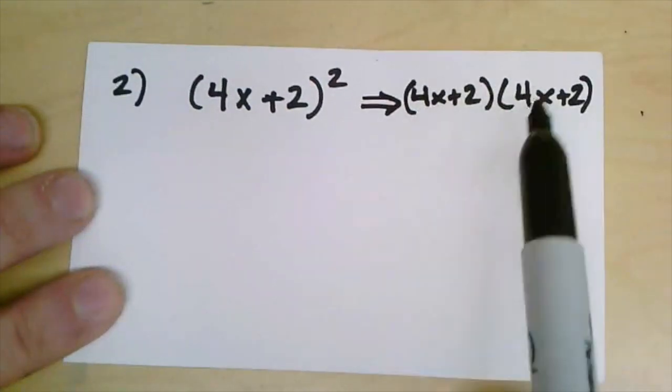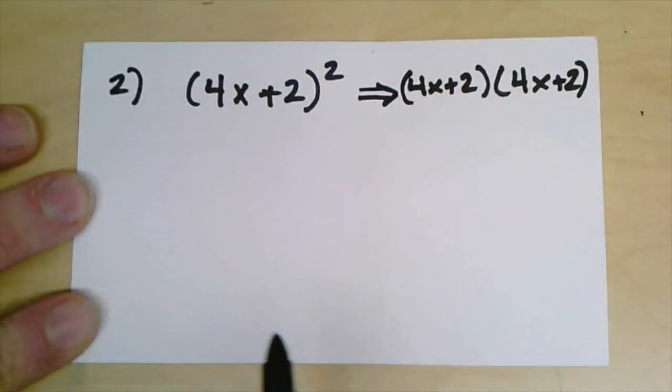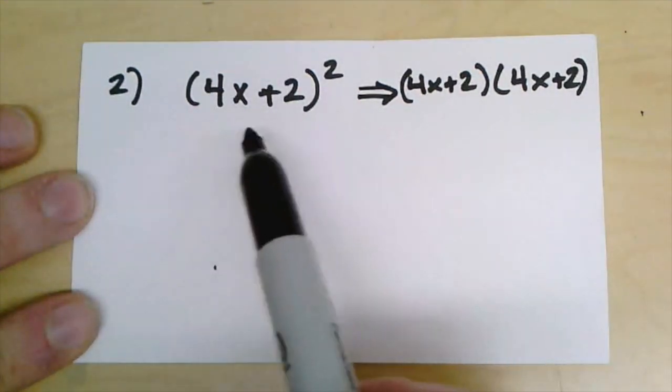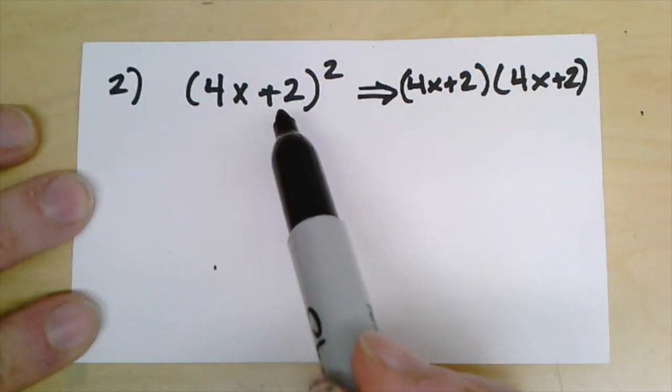And while you're right we could go through and FOIL this out or use the box method to figure out what it is, even faster than that is recognizing that this is a pattern that's always going to be true. If we see this, this is what we call the square of sums.